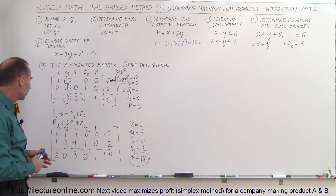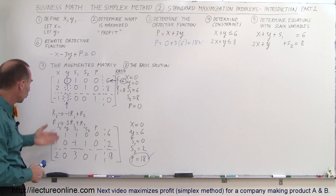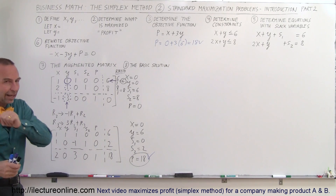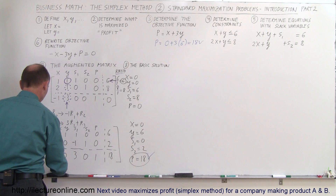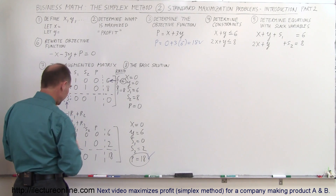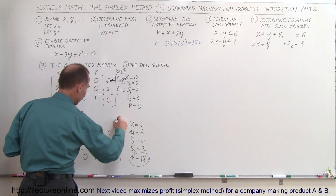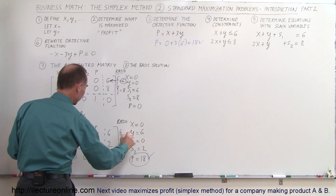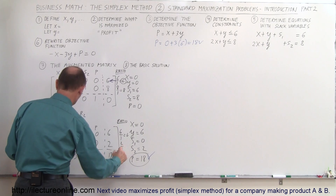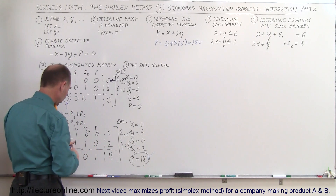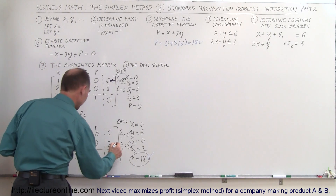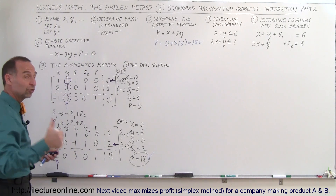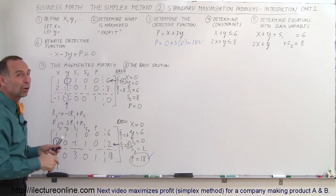Now, what would happen if we continued and tried to find a value for x — manufacturing both x and y products? Would profit go up, stay the same, or go down? Let's find out. We pivot on the x column next. The ratio test gives 6 divided by 1 equals 6 for row 1, and 2 divided by 1 equals 2 for row 2. The smallest ratio is 2, so we pivot about row 2 — a different row than before, which is important since pivoting twice on the same row causes problems.